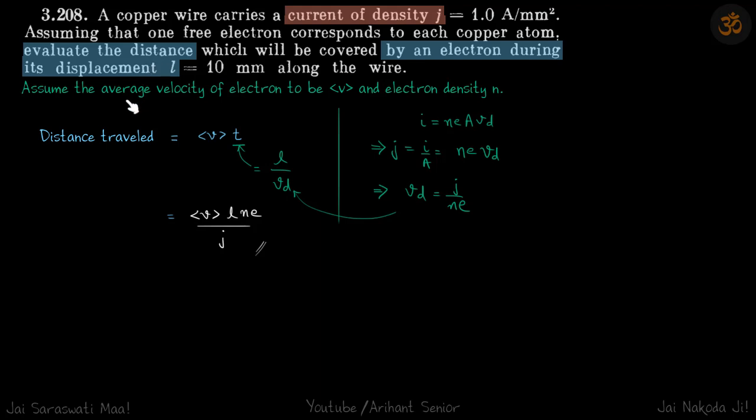To calculate the distance, we need to know the average velocity of the electron. It's not given, but let us assume the average velocity to be V. And also we will need electron density for this problem, so let us assume that to be N.